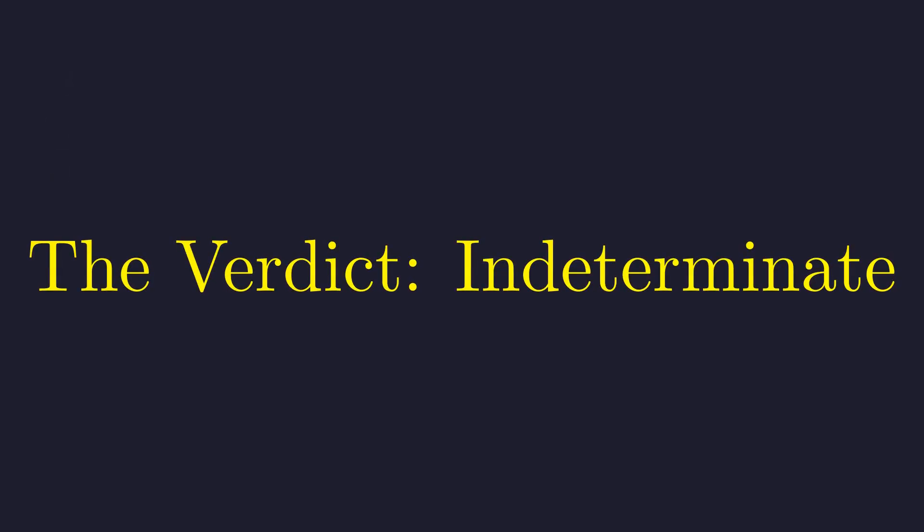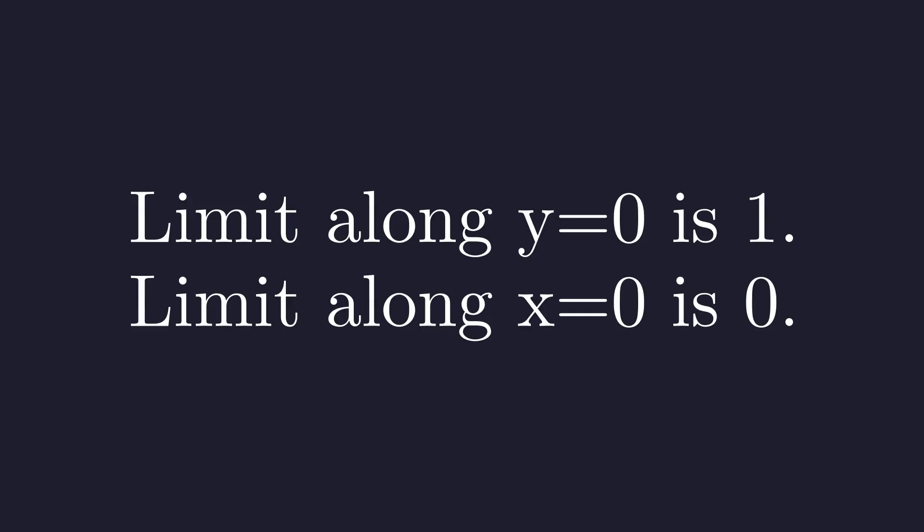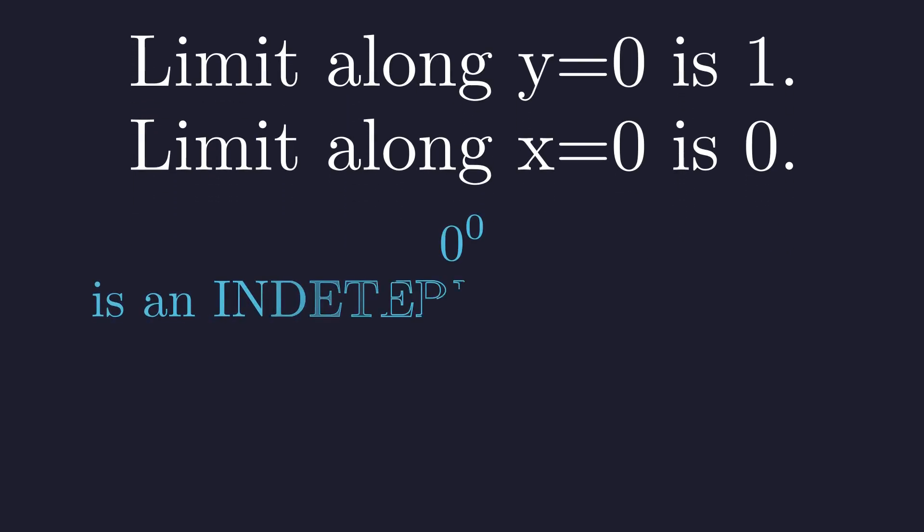So let's summarize our findings from the path analysis. We've found that two paths give us one, while one path gives us zero, demonstrating the limit depends on the path of approach. Because the limit is path-dependent, the conclusion from calculus is definitive: the limit does not exist. In the context of calculus, zero to the power of zero is an indeterminate form, joining others like zero divided by zero and infinity over infinity.